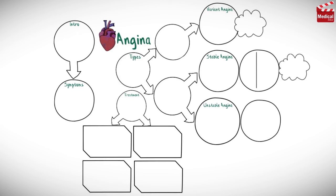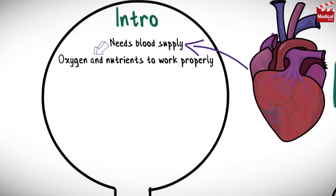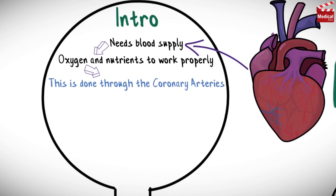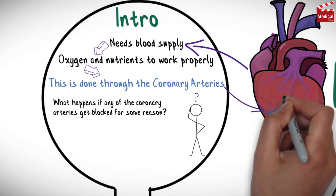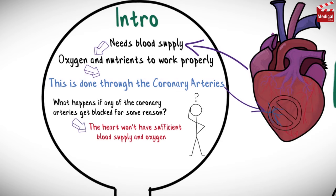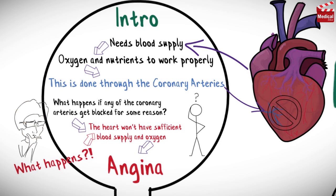In this video we'll discuss angina, covering an introduction, the symptoms associated with it, the three types of angina, and finally an introduction to the drugs used for it. The heart, like any other organ in the body, needs blood supply, oxygen, and nutrients to work properly, and this is done through the coronary arteries. If any of the coronary arteries get blocked, the heart won't have sufficient blood supply and oxygen — and that's simply what causes angina.